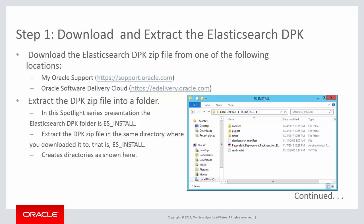The setup directory includes the setup scripts. When you extract the file, an Elasticsearch manifest file is also created, which includes version information about Elasticsearch and JRE provided in the DPK.